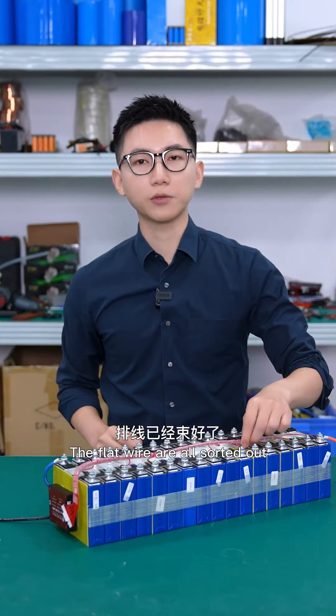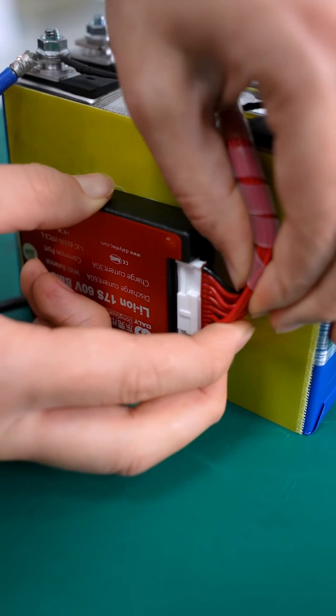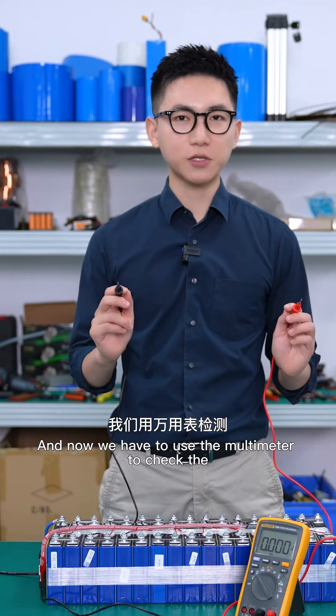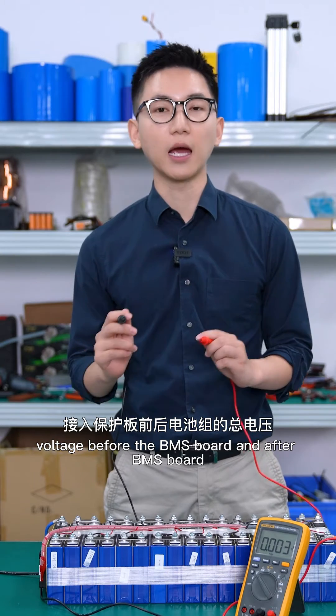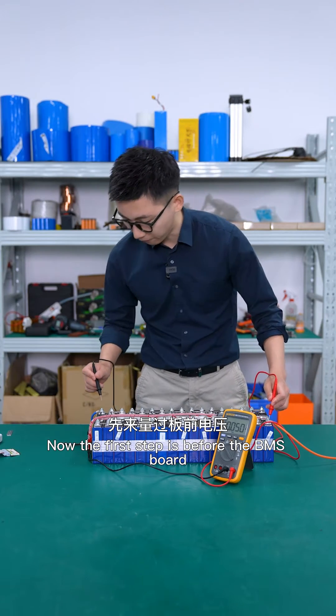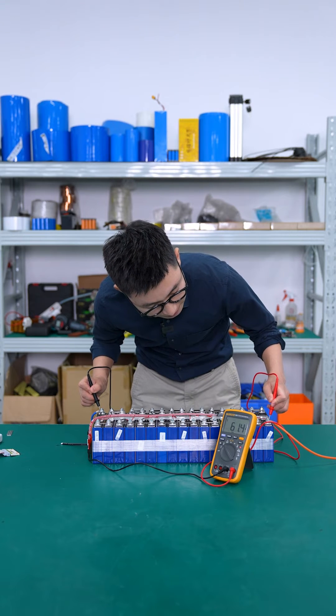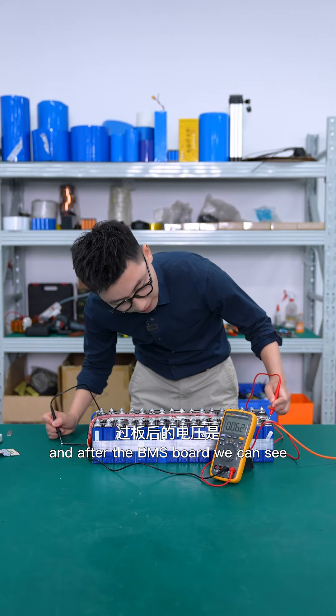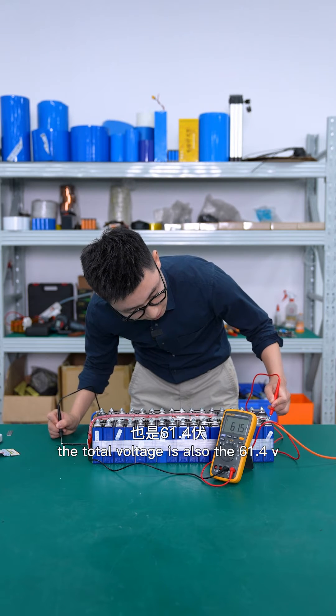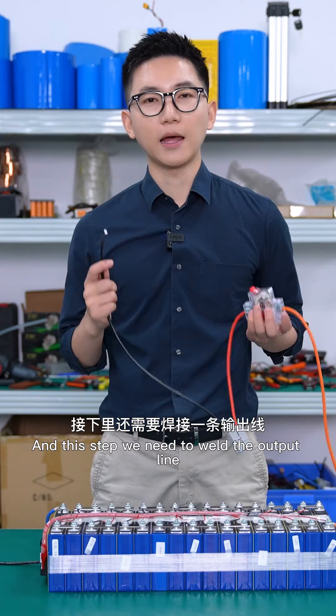The flat wires are all sorted out. Next up, we're going to plug in the BMS board. And now we're going to use the multimeter to check the voltage before the BMS board and after the BMS board. And now the first step is before the BMS board, we can see the total voltage for this battery is 61.4 volts. And after the BMS board, we can see the total voltage is also 61.4 volts.